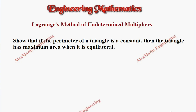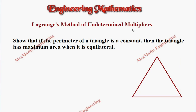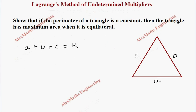Hi students, this is Alex. In this video we are going to solve a problem based on Lagrange's method of undetermined multipliers. The question is: show that if the perimeter of a triangle is constant, then the triangle has maximum area when it is equilateral. Let's take a small rough diagram of a triangle where the sides are A, B, and C. Since the perimeter is constant, A plus B plus C equals K.